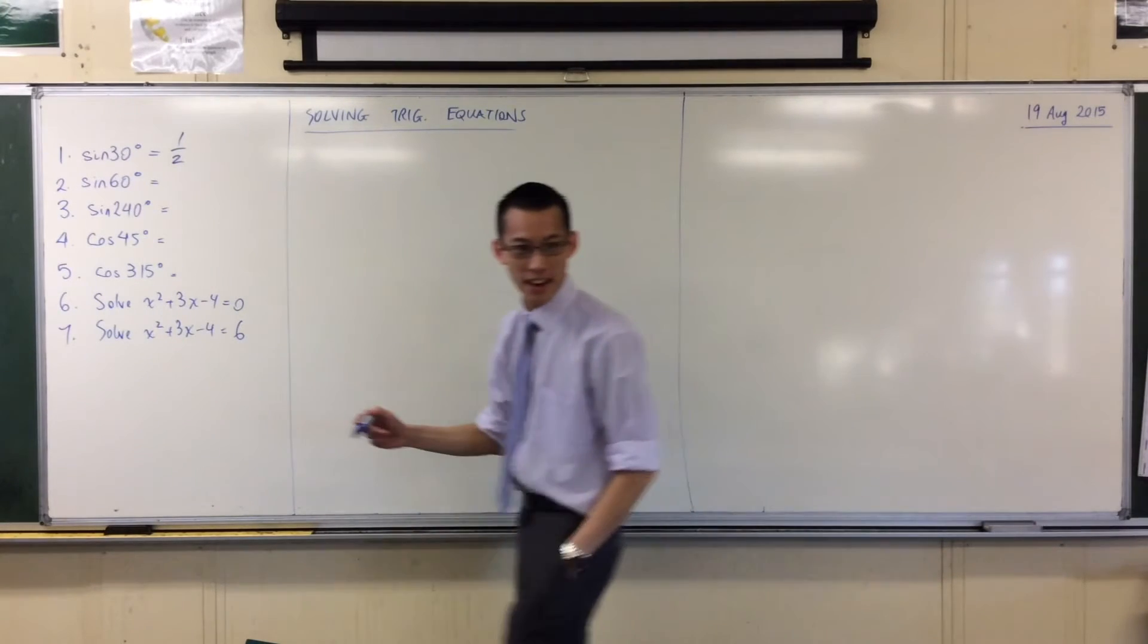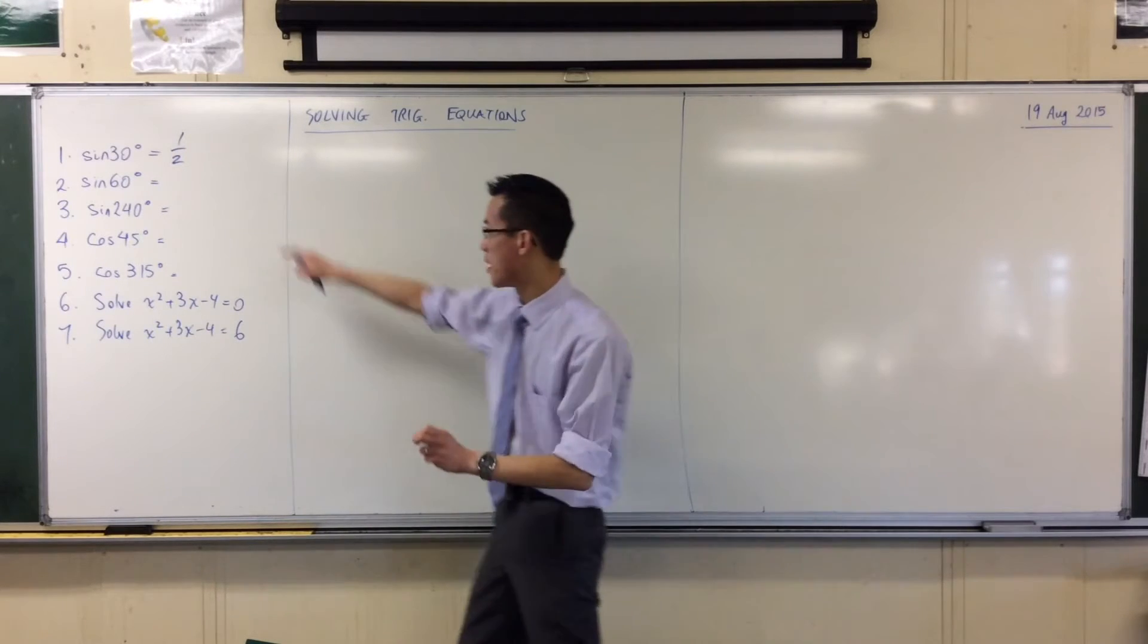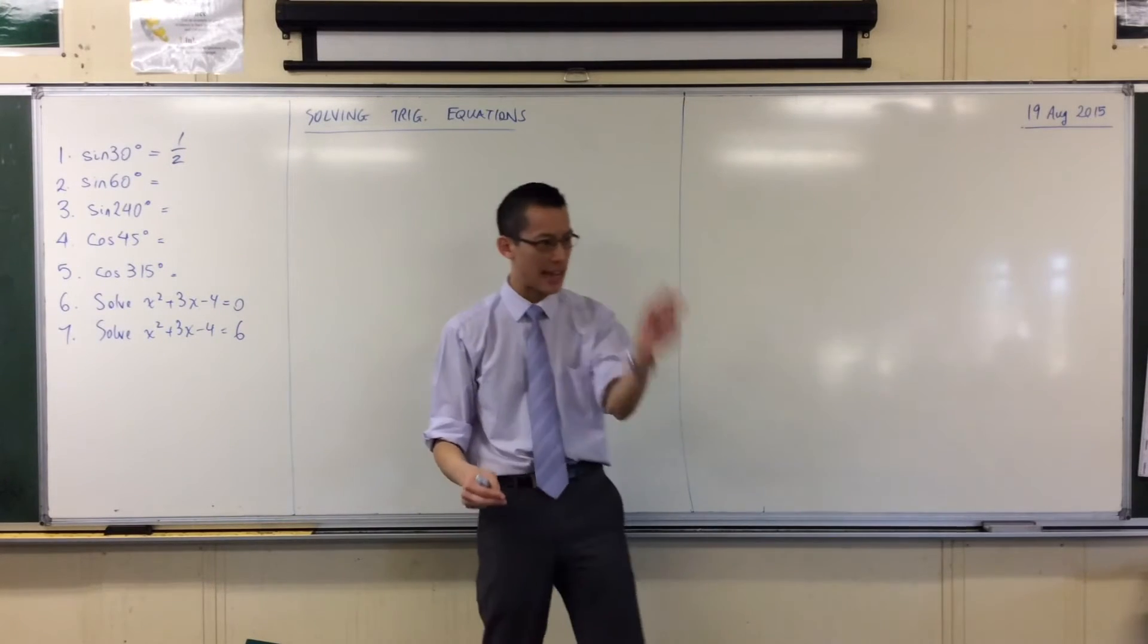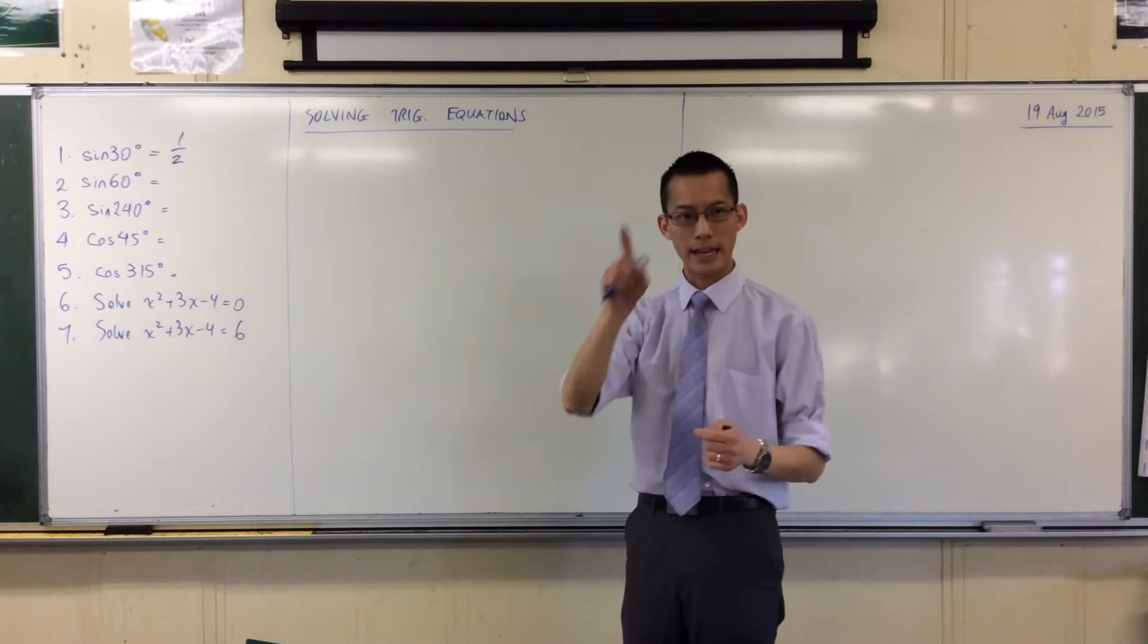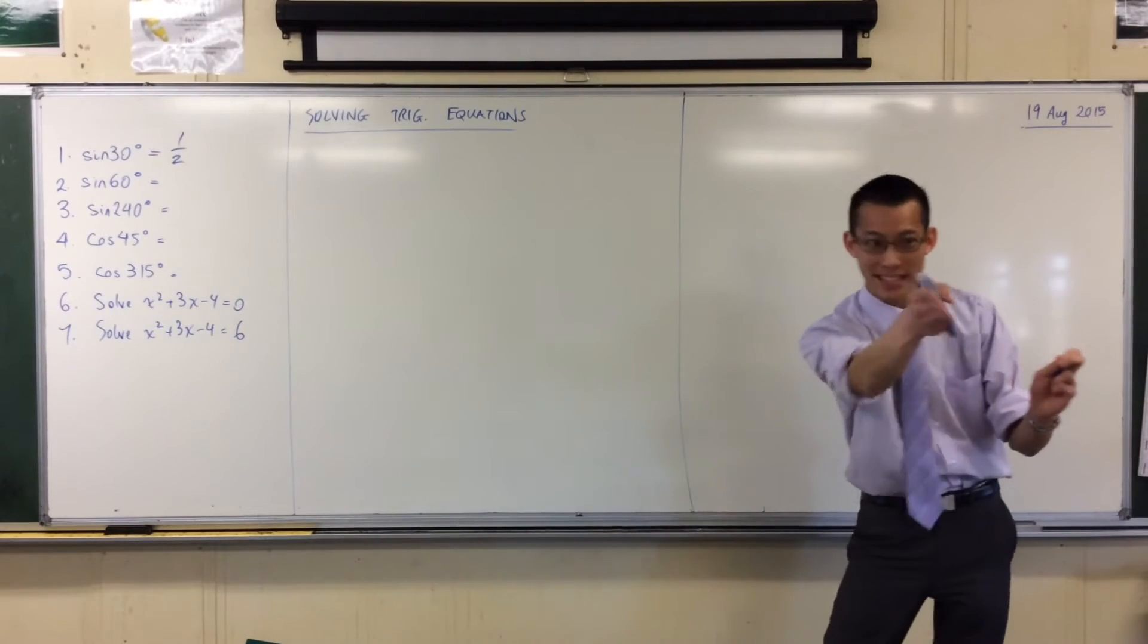Sin 60, a bit trickier. You can do it as a decimal, 0.866. But remember, these guys are special because we can get exact values. We don't need to resort to decimals. We can have some square roots and thirds. So 0.866, what third is it equal to?